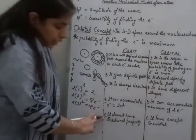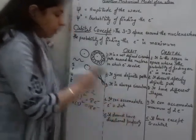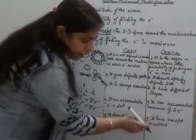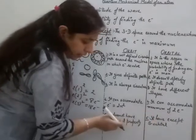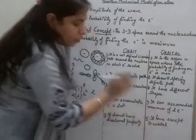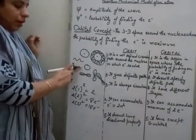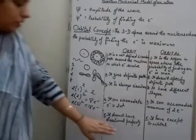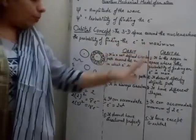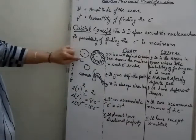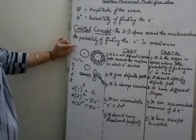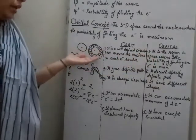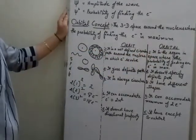An orbit doesn't have a directional property because it is circular in shape. An orbital, except for the s orbital, does have directional property — p is dumbbell-shaped, and d and f are double dumbbell-shaped. So the difference between orbit and orbital is clear: orbit is simply the circular path around the nucleus in which the electron revolves, and orbital is the region of maximum probability of finding the electron around the nucleus.